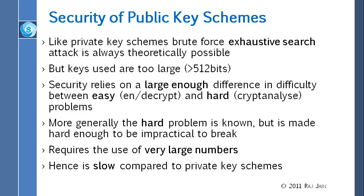These are some common properties of most public key systems. First, you cannot do exhaustive search because the keys are so long — at least 1024 bits today. The security basically relies on mathematical difficulty: you can't perform certain calculations easily. Very large numbers are used, and therefore all public key schemes are very slow.